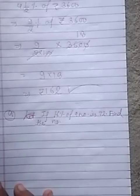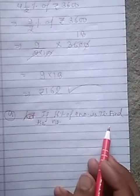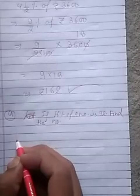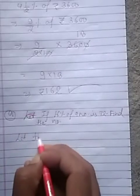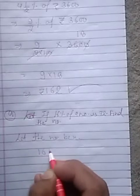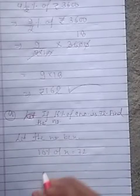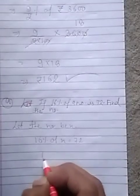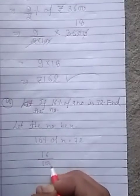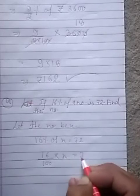Question number 4: If 16 percent of a number is 72, find the number. Let the number be x. So 16 percent of x is equal to 72. 16 upon 100 into x is equal to 72.